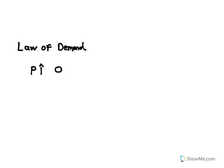If you remember back in unit two, we talked about the law of demand, which says that if we increase the price of a good, the quantity demanded — how much we're willing and able to buy at a specific price — falls. What elasticity, or the price elasticity of demand specifically, looks at is by how much does the quantity demanded fall? For example, if the price of a good increases by 20%, does quantity demanded fall by 20% exactly? Does it fall by 50%? Does it fall by 5%?